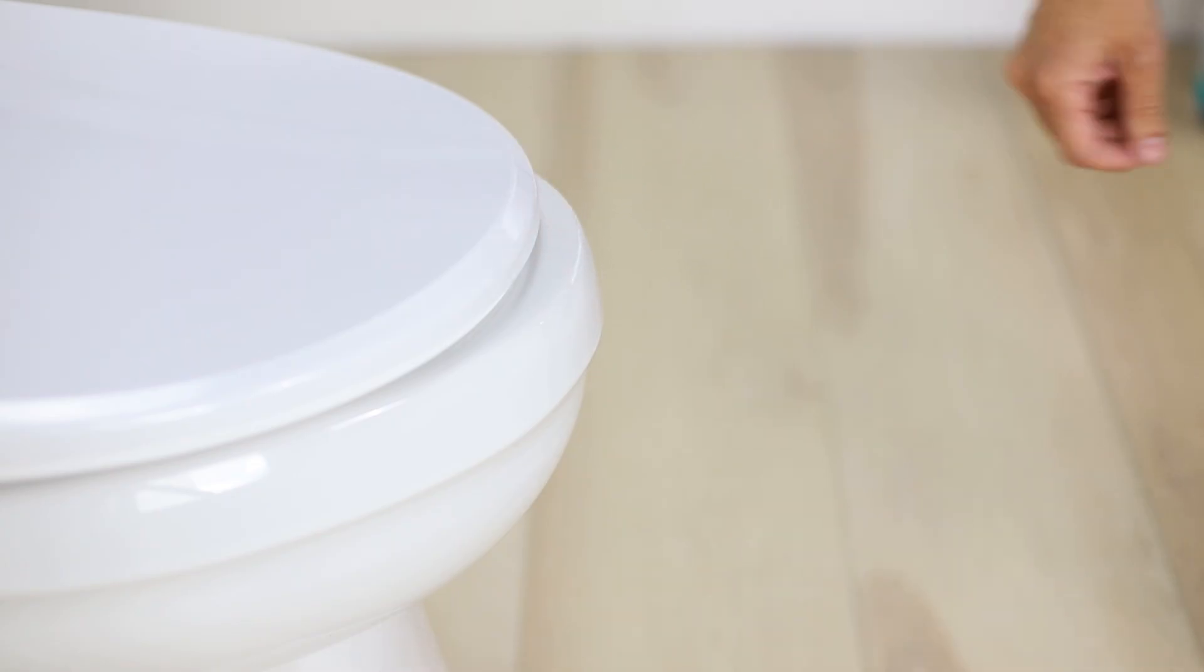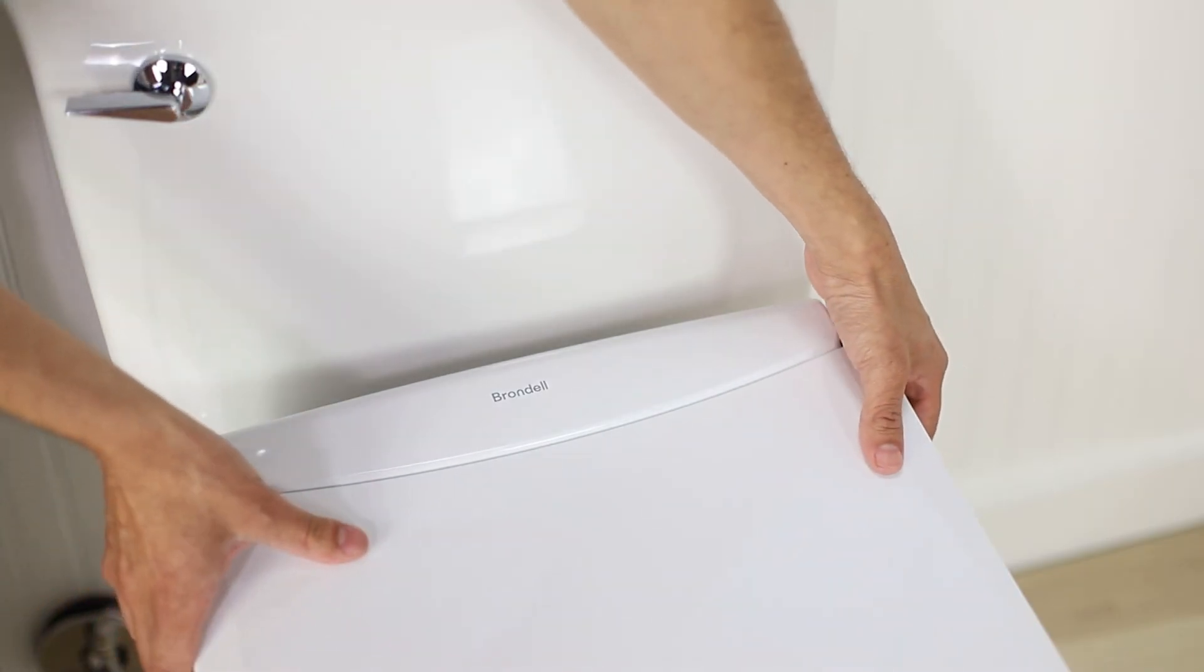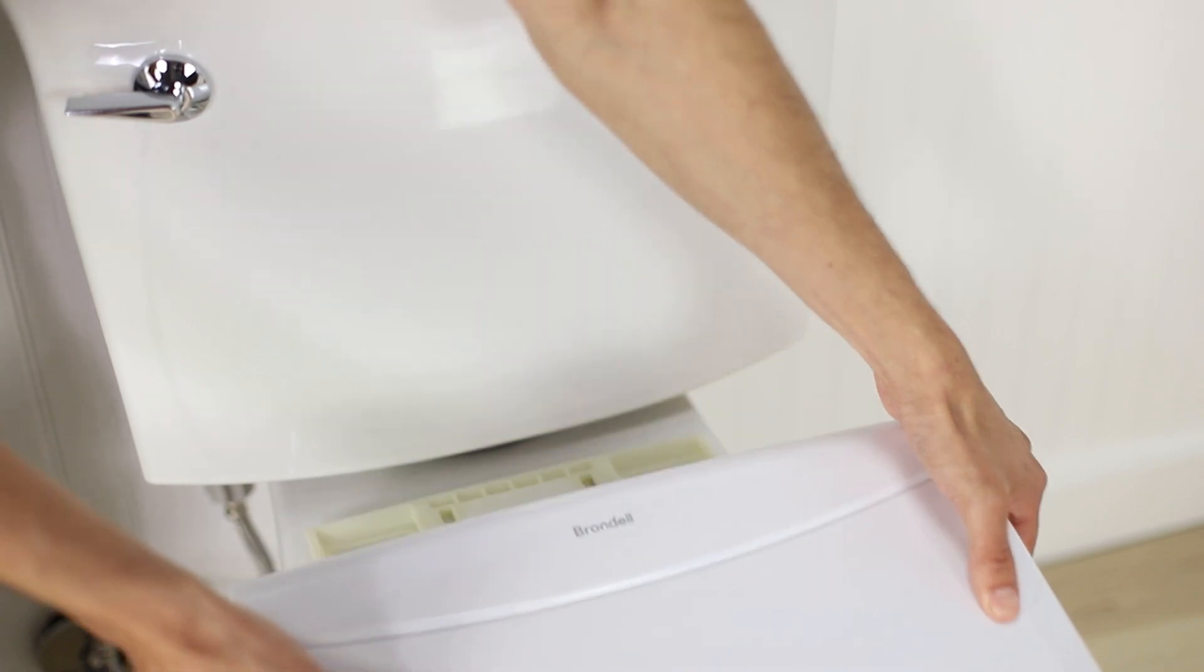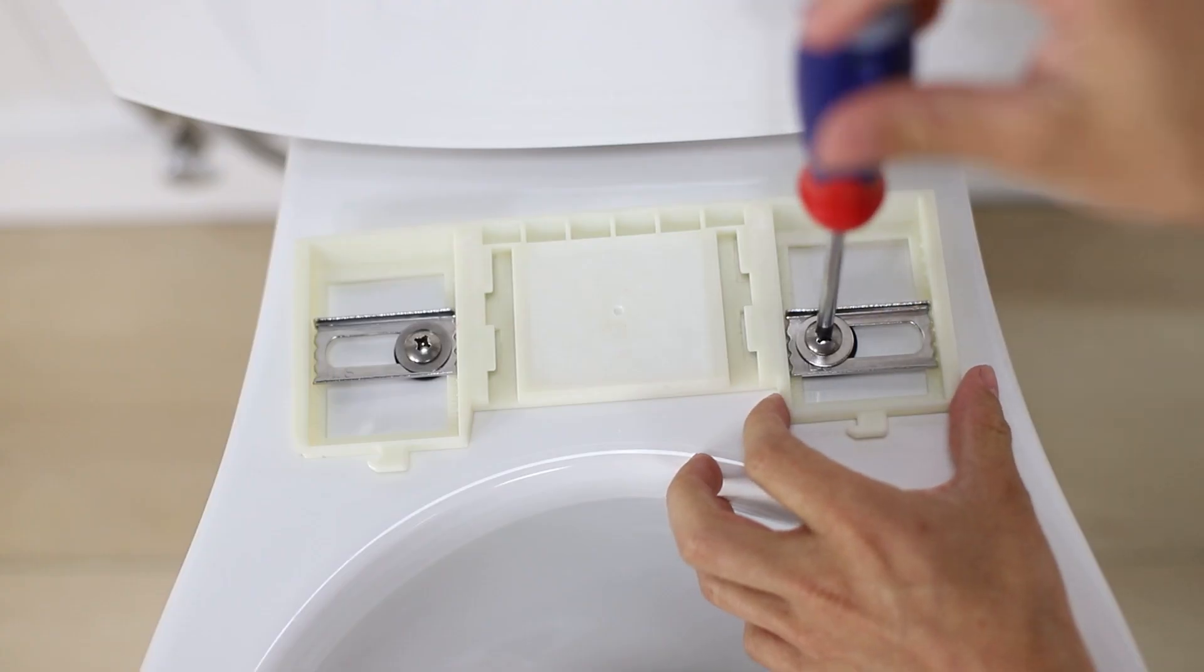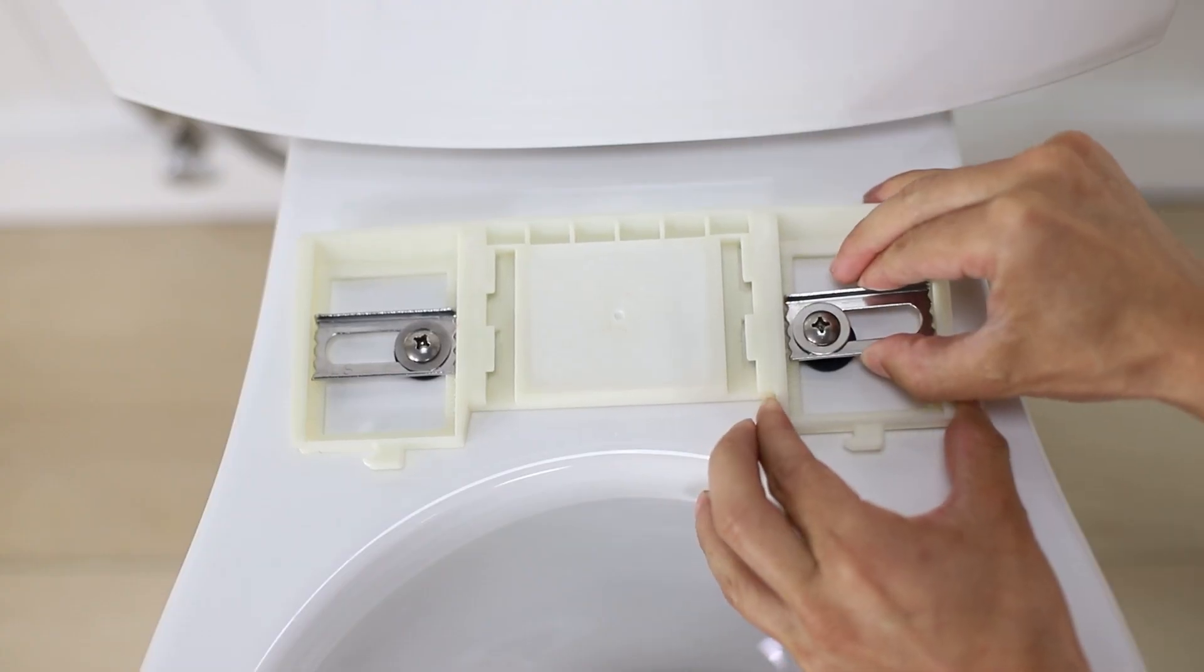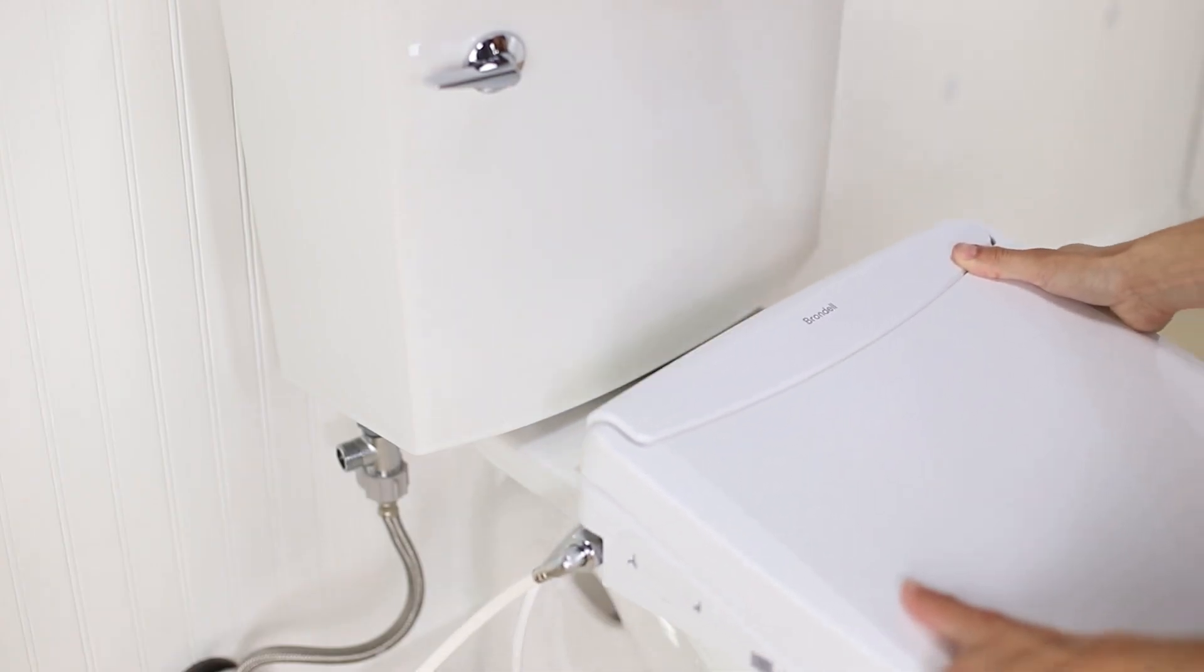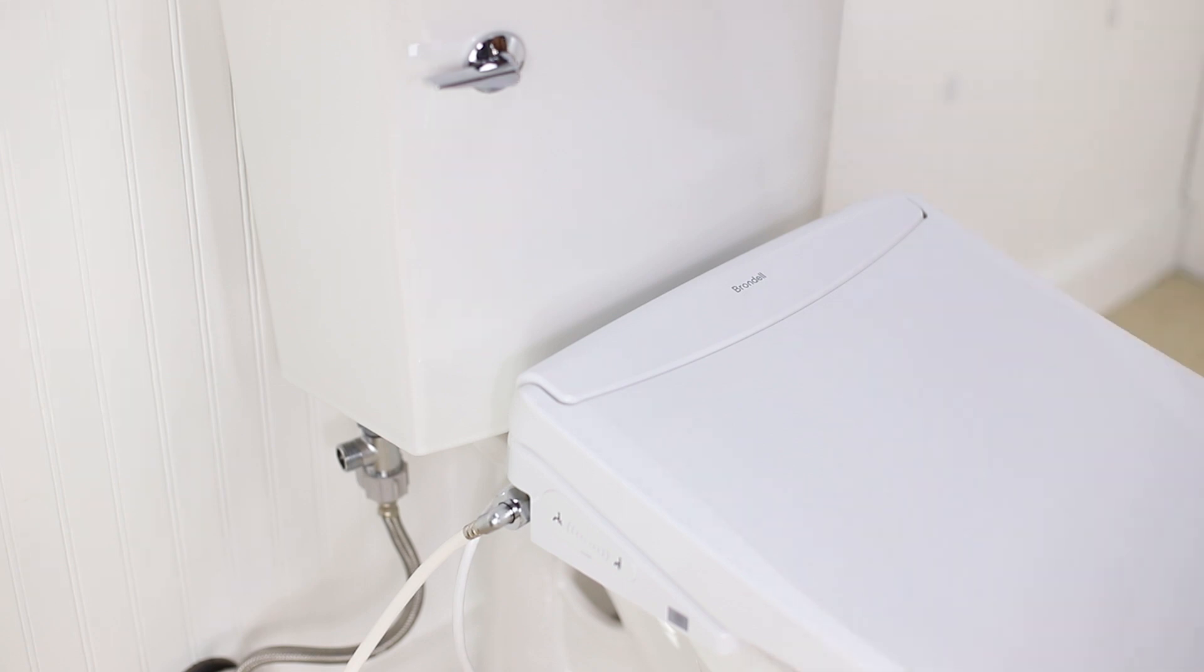To adjust the position of the seat, remove the seat by pressing the quick release button located on the right side of the seat and slide it off the mounting plate. Loosen the bolts and slide the mounting plate back and forth to readjust the placement. Reinstall the seat and check the alignment to the edge of the toilet bowl.